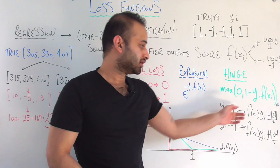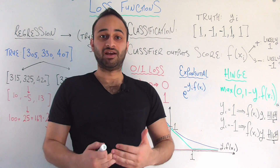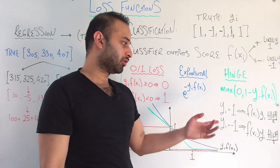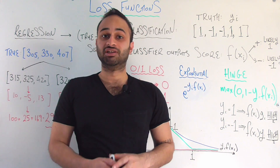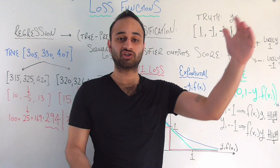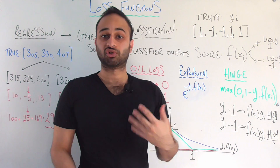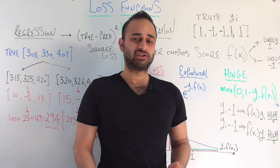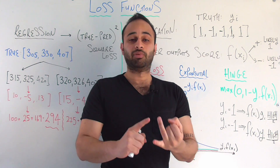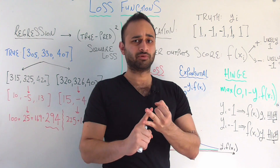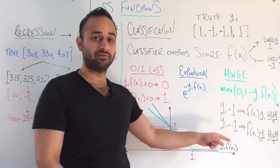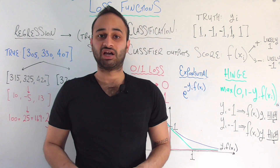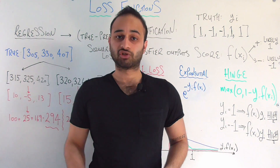Conversely, if this quantity is very low or very negative, that is the worst-case scenario. For example, that would mean the person actually finished the marathon in above average time — so y sub i equals 1 — but f of x sub i is an extremely negative number. We're saying the class was actually 1, but the model confidently predicted negative 1. Keep this quantity in mind because you'll see it come up in each of the loss functions we're about to look at.